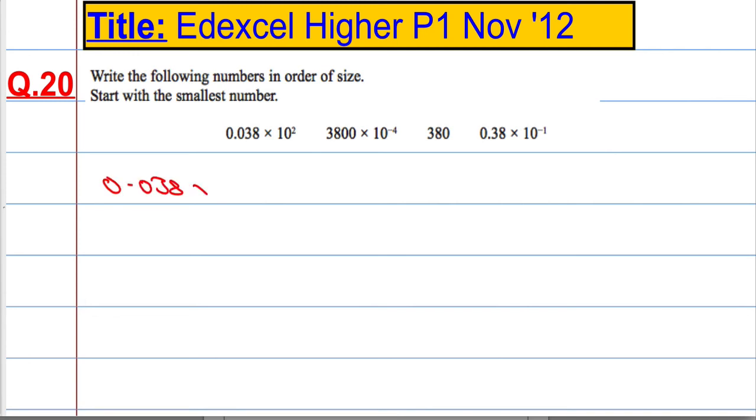Let's start with the first one. 0.038 × 10² is the same as multiplying it by 100. Essentially, 10 squared is 100, so the numbers will move two places to the left, which gives me 3.8.